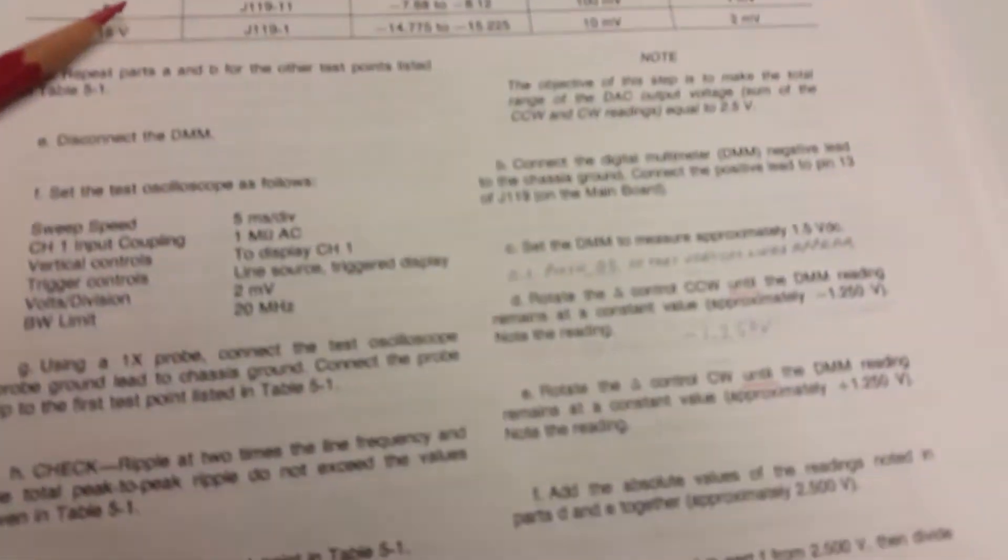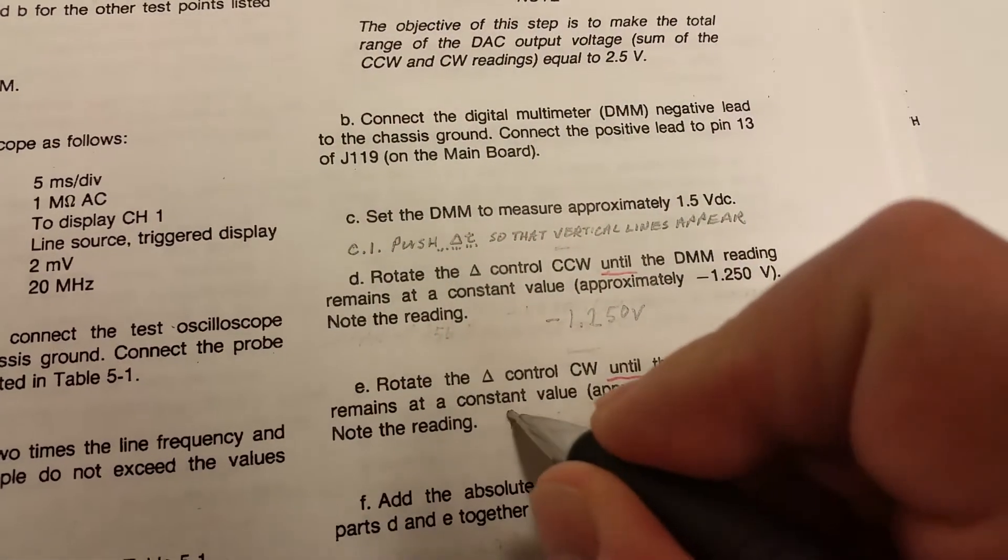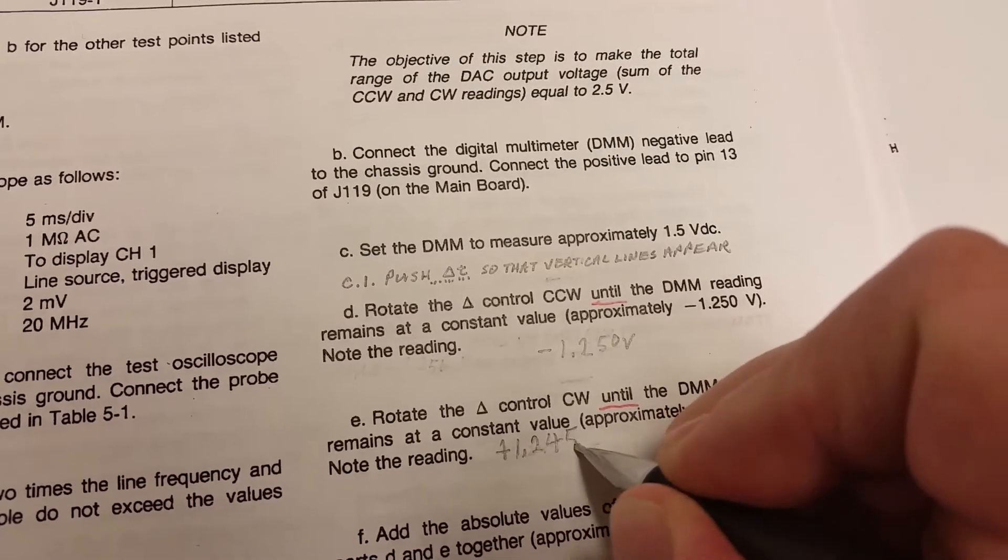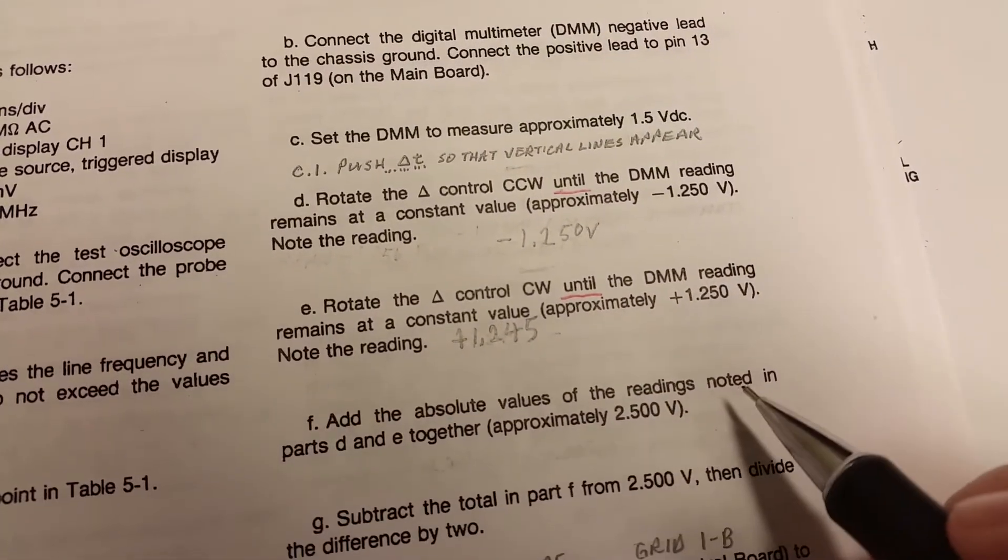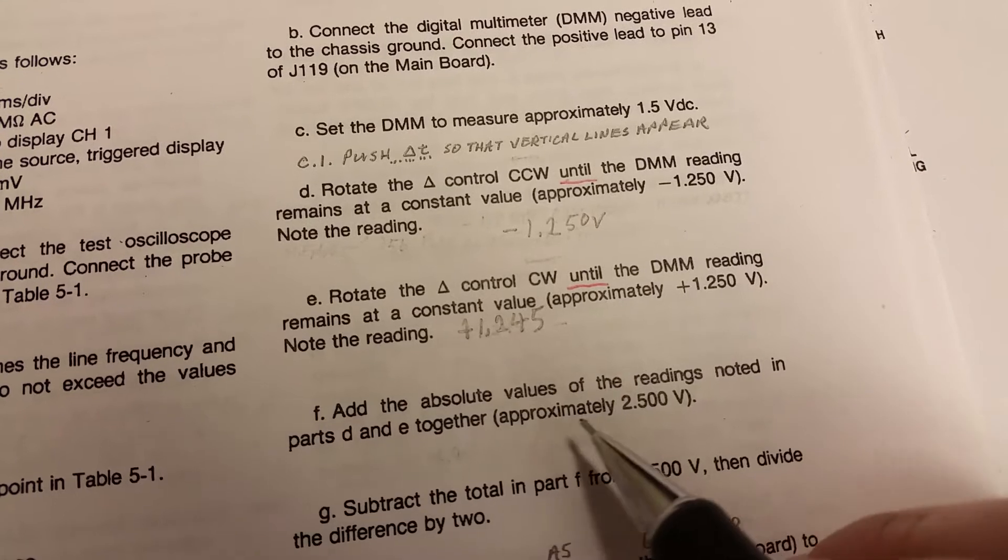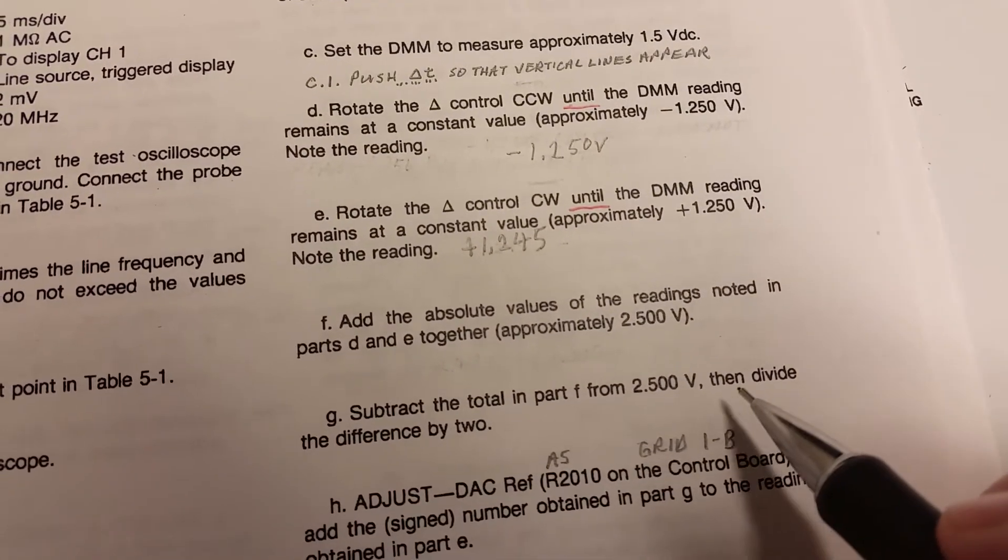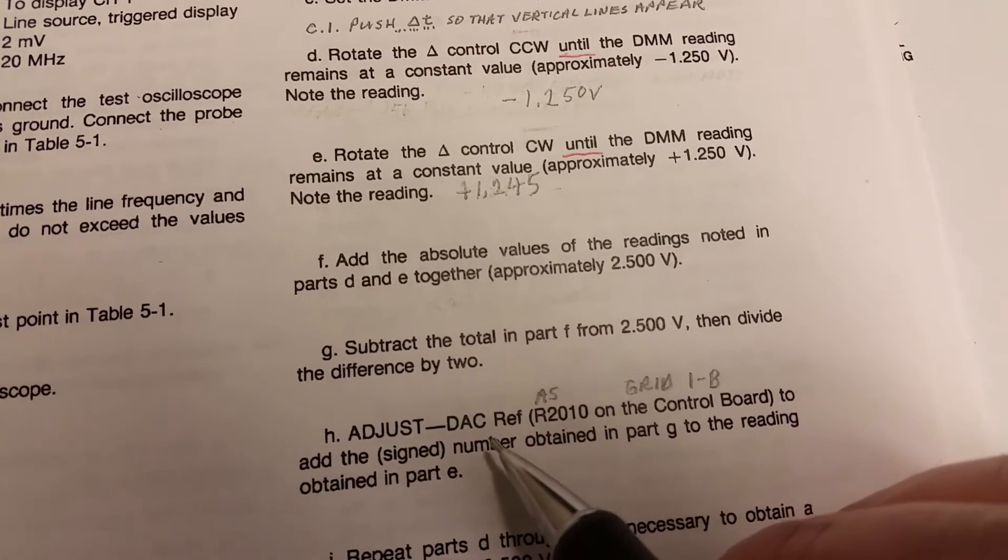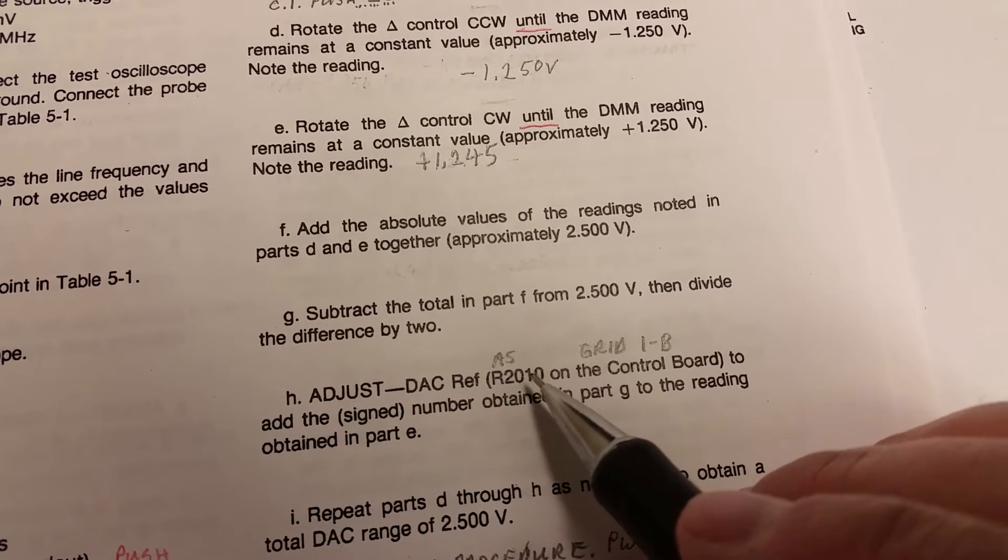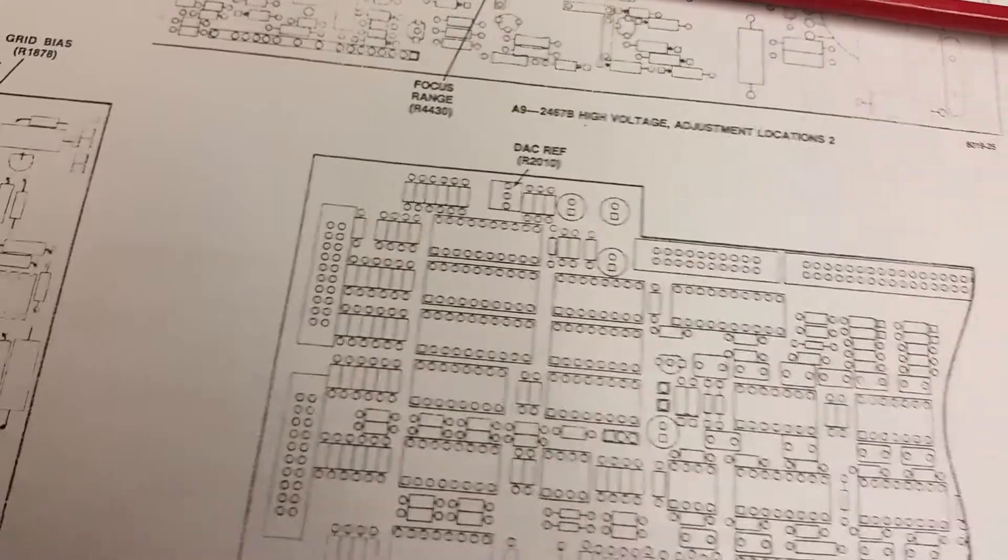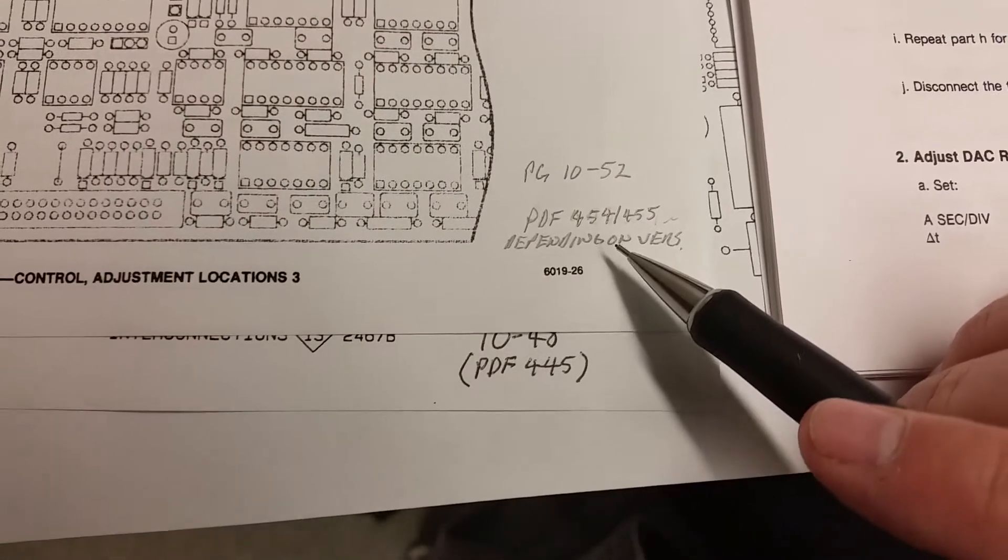What happens is you have to actually go and adjust this little DAC here. Here I'm doing what they call take note of the reading. When you add the two together, if you take off the signs, you should get two and a half volts as I mentioned earlier. Then you're supposed to divide it by two and then get a reference. This is the actual adjustment point for centering it up.